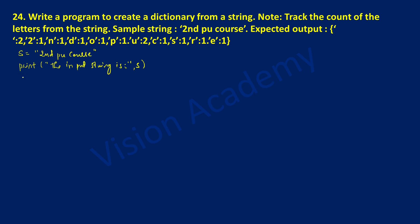Now I'm going to create an empty dictionary. I'll write the variable s1 is equal to an empty dictionary using empty braces. Now I'm going to iterate through this string using a for loop: for character in s, put colon. This for statement is going to traverse through all the characters from the beginning to the end of the string.